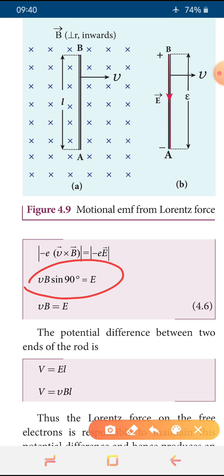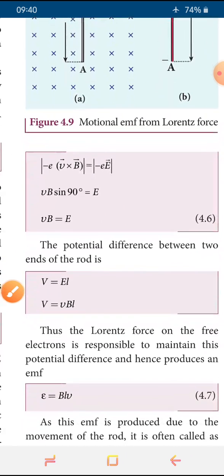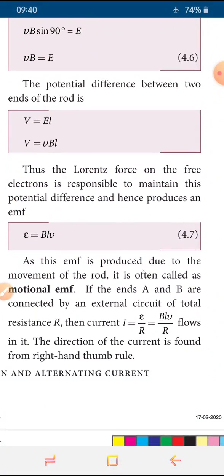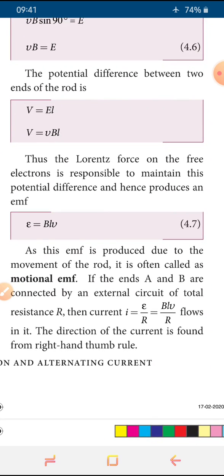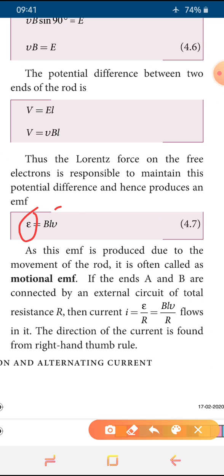Substituting E = VB into the potential difference formula V = EL, we get: potential difference = VBL. Since the Lorentz force on free electrons is responsible for maintaining this potential difference, it produces an EMF. The equation is written as ε = BLV. This is equation 4.7 and since the EMF is produced due to the motion of the rod, it is called Motional EMF.